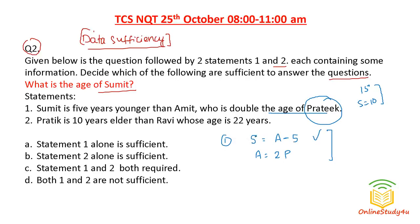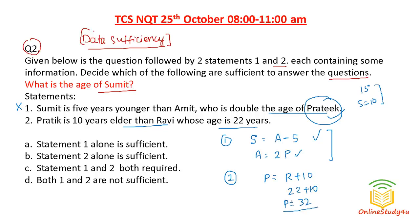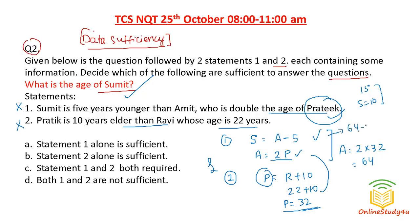Statement two: Prateek is 10 years elder than Rabbi, whose age is 22. So Prateek's age is 22 plus 10 equals 32. But from statement two alone we also cannot answer, because we need Sumit's age, not Prateek's. However, combining both statements: Prateek is 32, Amit is 2 × 32 = 64, and Sumit is 64 − 5 = 59. So both statements one and two together are required to find Sumit's age.